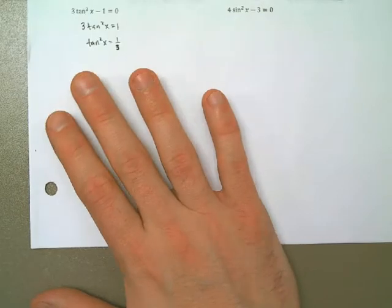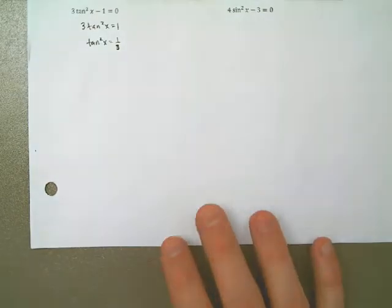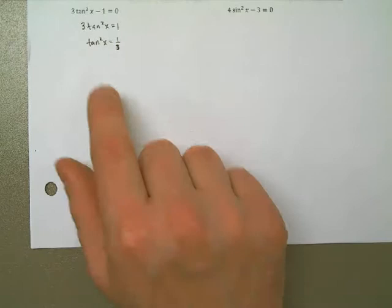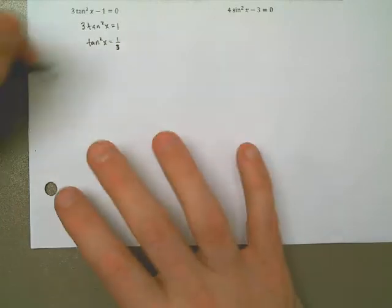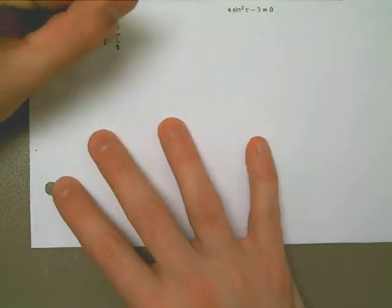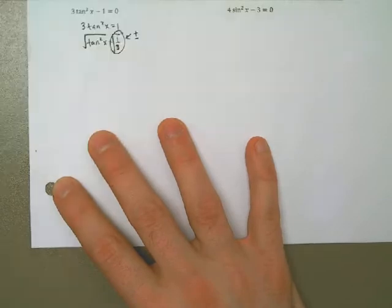Now in order to take care of the square — now that I've got the square term by itself — I can take the square root of both sides. I'm going to take the square root of both sides, remembering that this has to be plus or minus. Plus or minus the square root of 1 third.